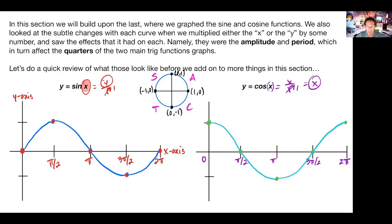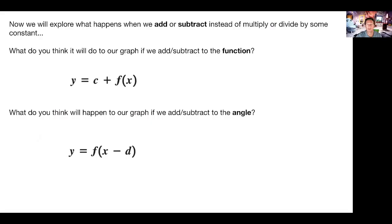The amplitude is one — a distance of one both up and down from the x-axis. Our period, the length of time it takes to repeat, is two pi. Now we're going to look at what happens if, instead of multiplying by some number to the x or y value — which changes our period or amplitude — we added or subtracted to our function. And again, to both the x and the y.